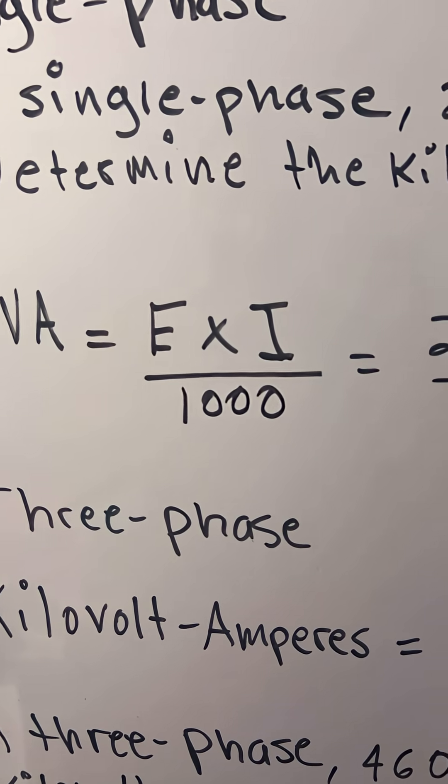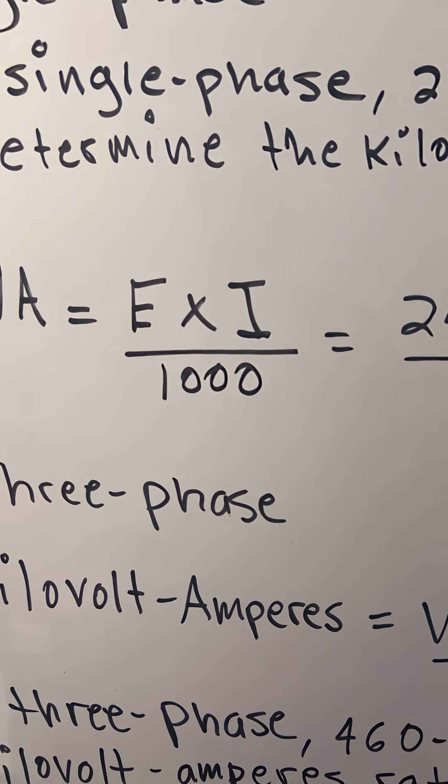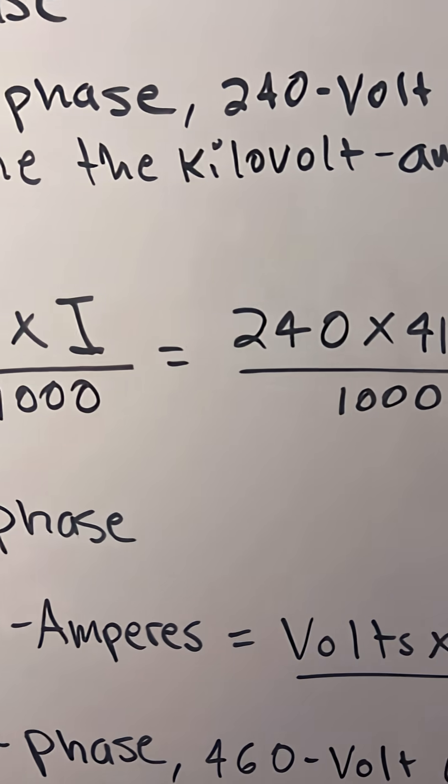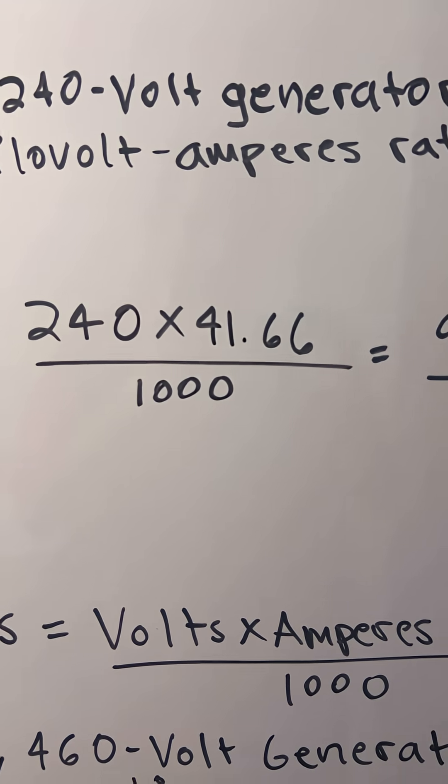times I divided by 1000, where E equals your voltage and I is your amperes. So 240 times 41.66 divided by